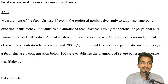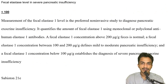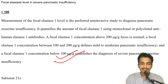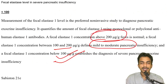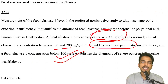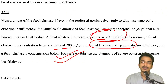Fecal elastase level in chronic pancreatic insufficiency — straightforward from Sabiston: below 100 is severe, between 100 to 200 is mild to moderate, and above 200 is normal. For a patient with pancreatic insufficiency, 100–200 is mild to moderate and less than 100 is severe.